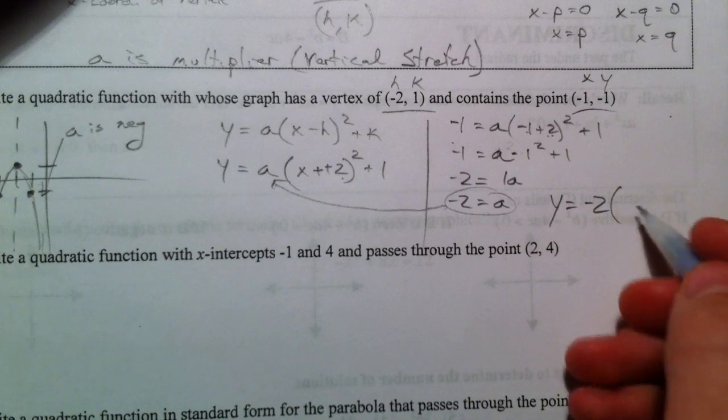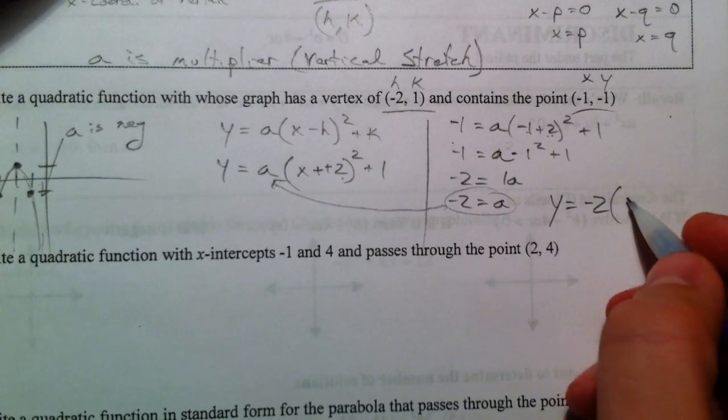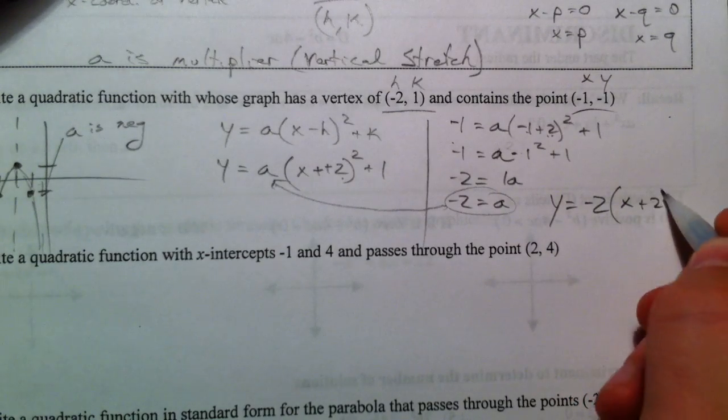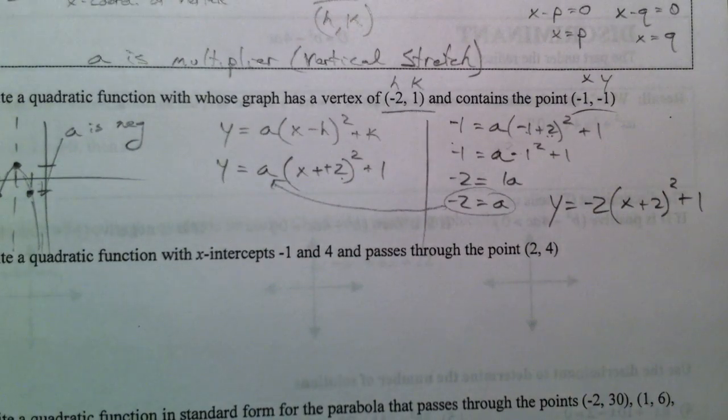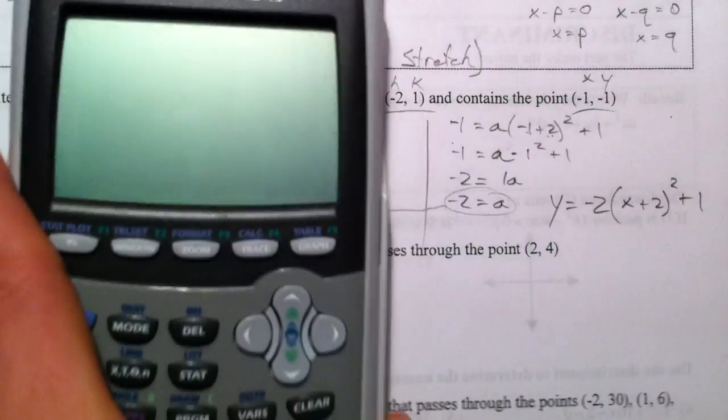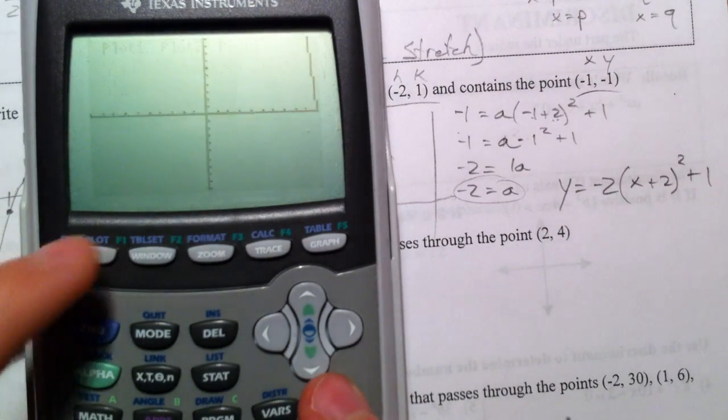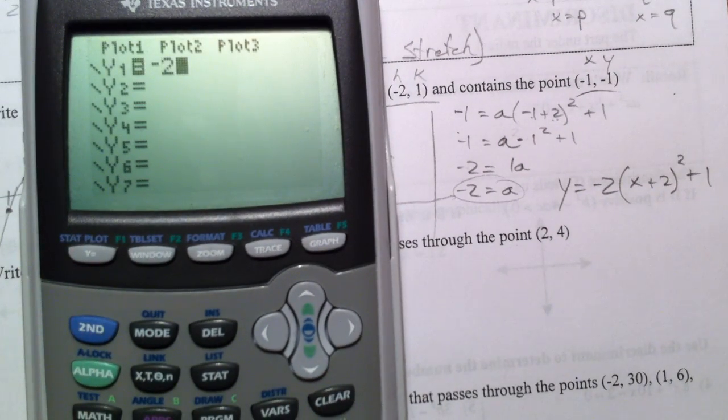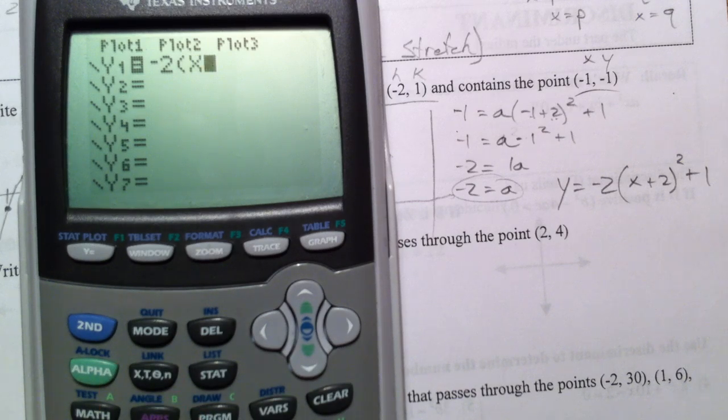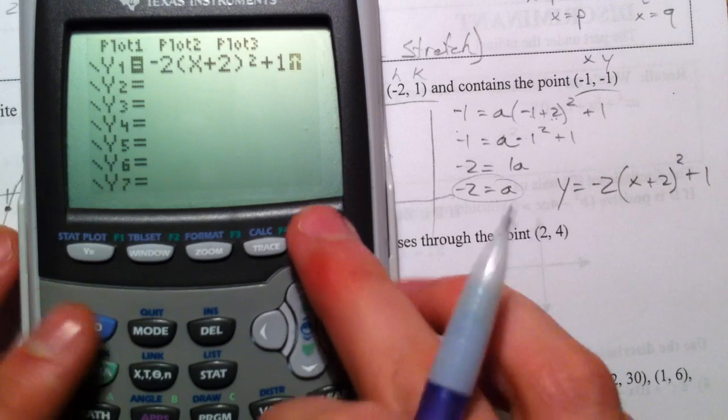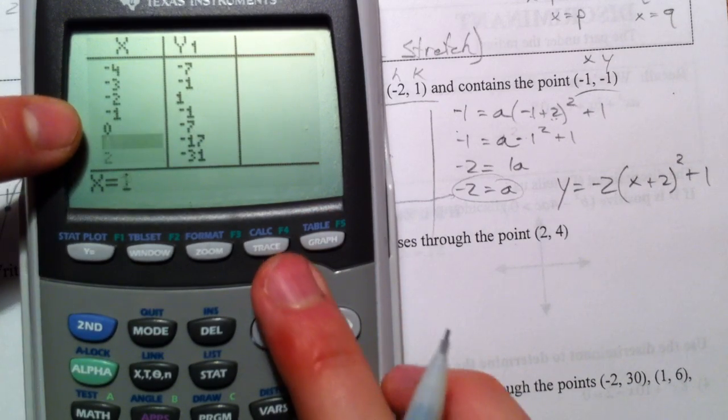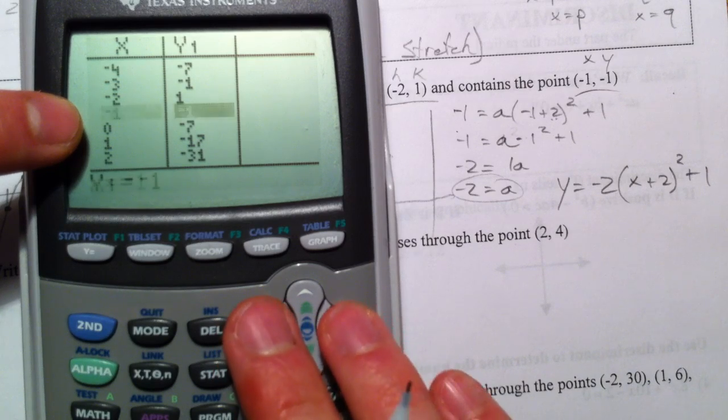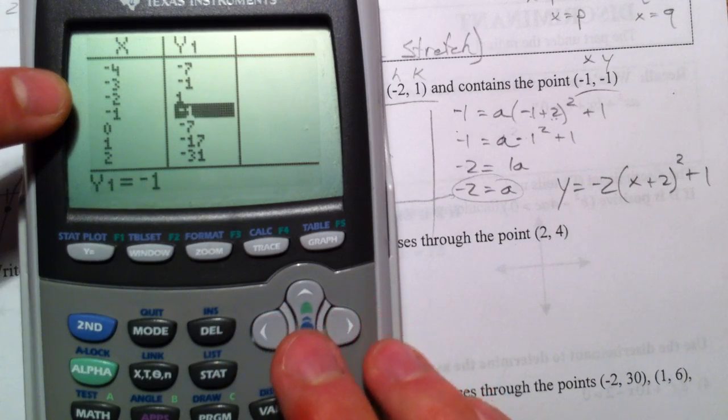Y equals negative 2 x plus 2 squared plus 1. What's nice is that you can check this by typing in negative 2 x plus 2 squared plus 1, and I'm going to go to my table.